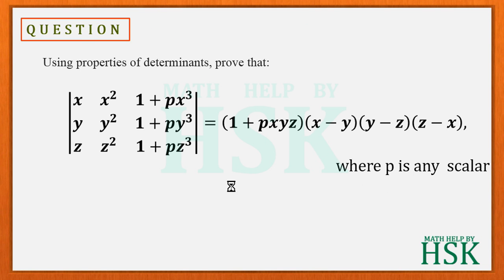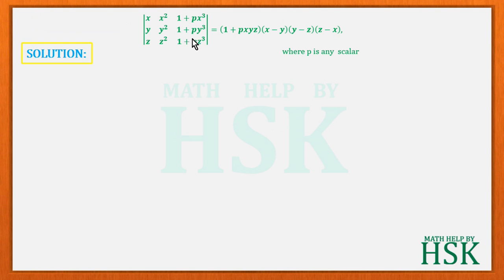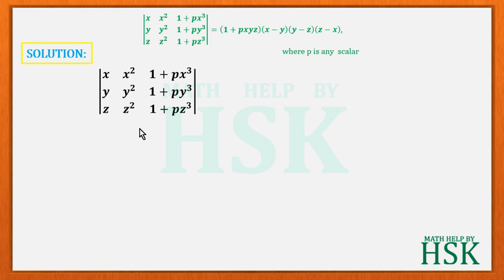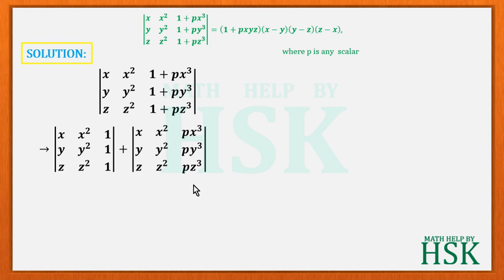To prove this, we start with the determinant itself. The key observation is that column 3 has two terms — it is expressed as a sum of two terms. Whenever a column of a determinant is expressed as a sum of two terms, we can write that determinant as the sum of two separate determinants.